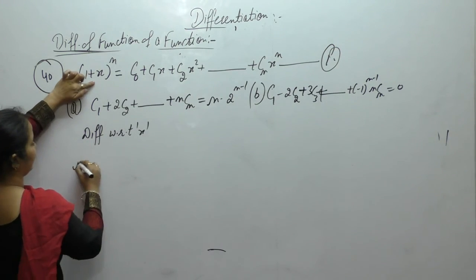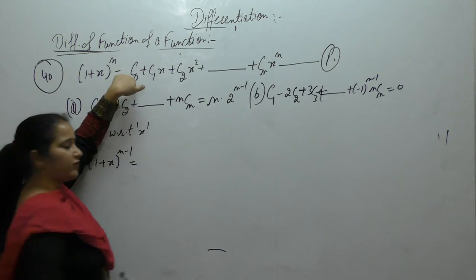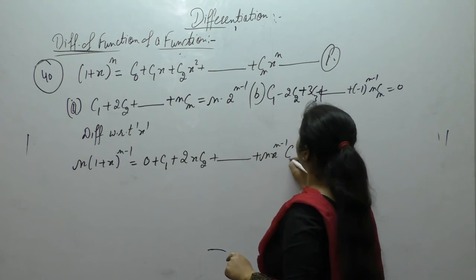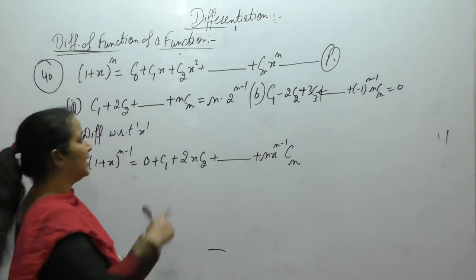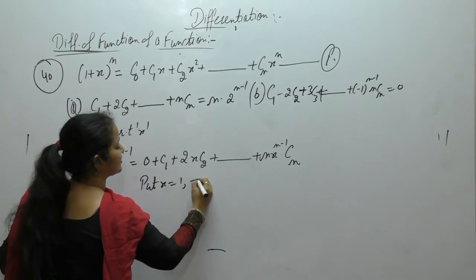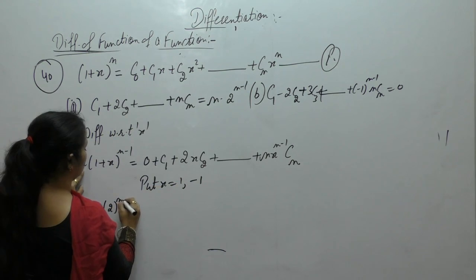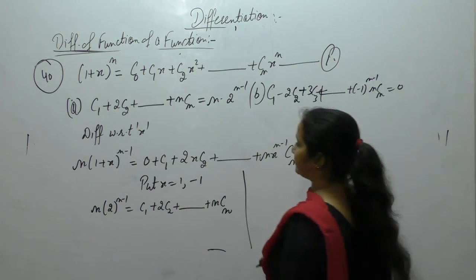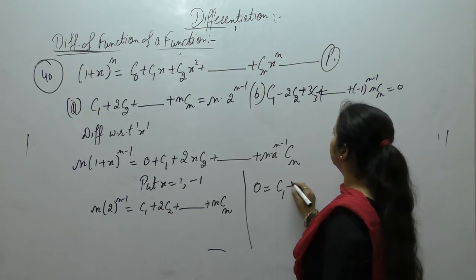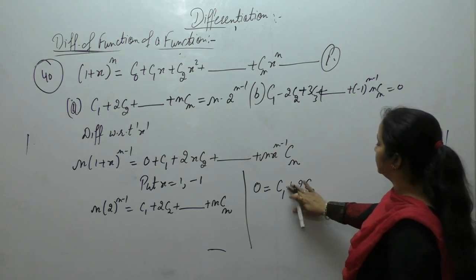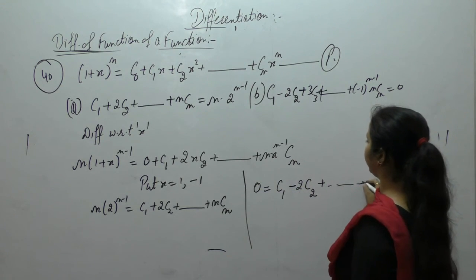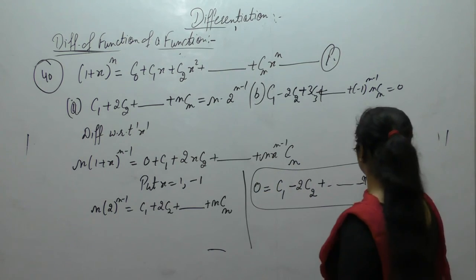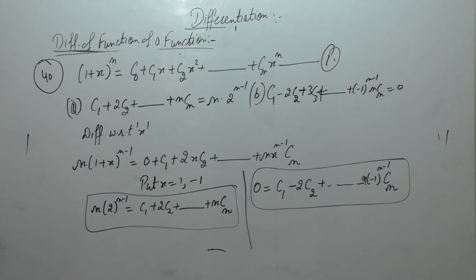Differentiating: n(1 plus x)ⁿ⁻¹ on the left. On the right, derivative of constant C₀ is 0, C₁, derivative of x² is 2x, and so on, derivative of xⁿ gives nCₙxⁿ⁻¹. Now put x equals 1: (1 plus 1)ⁿ⁻¹ equals 2ⁿ⁻¹, giving C₁ plus 2C₂ plus … plus nCₙ equals n times 2ⁿ⁻¹. When x equals minus 1: (1 minus 1) equals 0, giving C₁ minus 2C₂ plus … plus (minus 1)ⁿ⁻¹ nCₙ equals 0. This is what we wanted to prove.